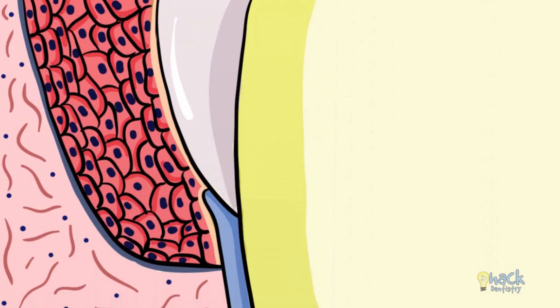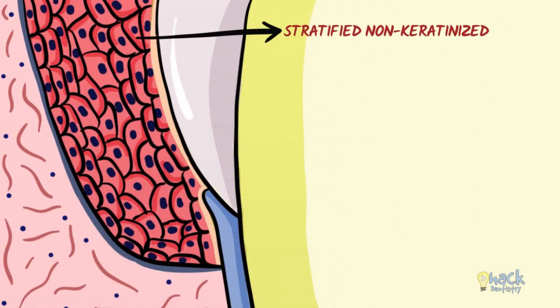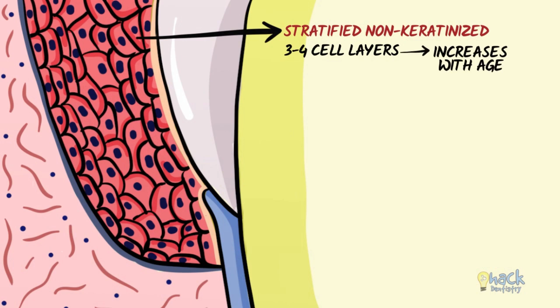The junctional epithelium is a stratified non-keratinized epithelium, usually 3–4 cell layers thick, but could increase in thickness as it ages.